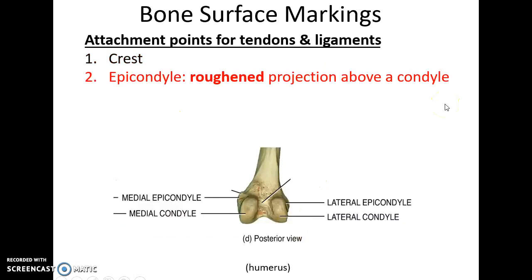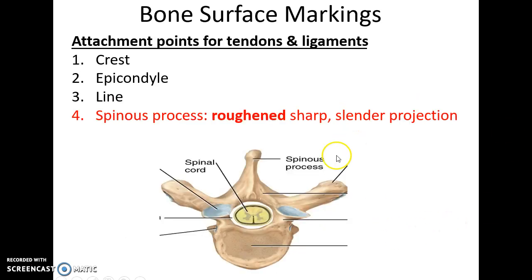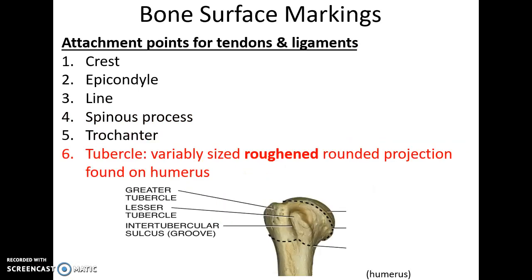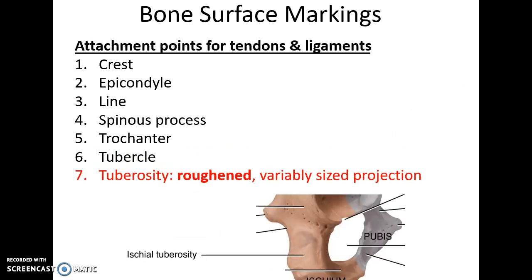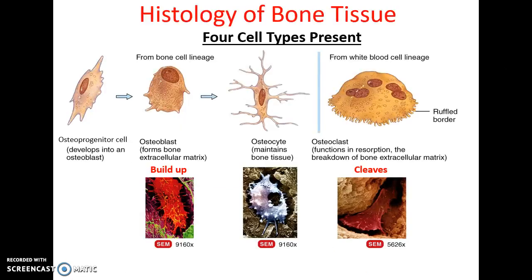An epicondyle is a rough projection proximal to, or above, a condyle. A line is a rough, narrow ridge or border. A spinous process is a portion of bone that sticks out dramatically — usually roughened and sharp. A trochanter is a large roughened area on the femur that attaches muscles. A tubercle is a large roughened projection for muscle attachment found on the humerus. A tuberosity is a large roughened area found on many bones.